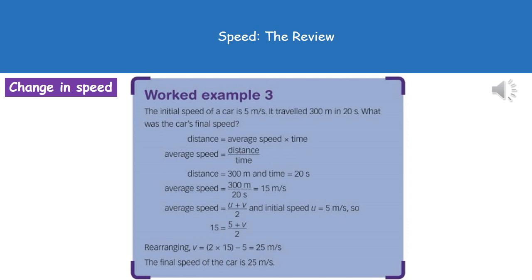What we've got here then is just a worked equation to show you how we can use these two calculations together. The question we've got: the initial speed of a car is 5 m/s, it traveled 300 meters in 20 seconds, what was the car's final speed? First thing we need to do is work out the average speed because we've got our distance and our time in the question. So what we're going to do is 300 divided by 20.